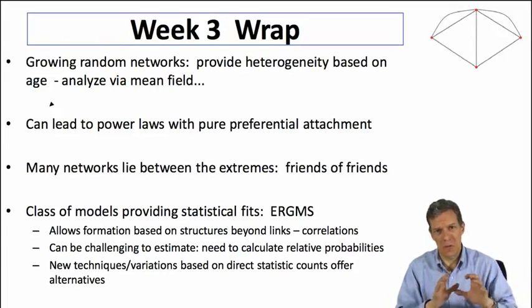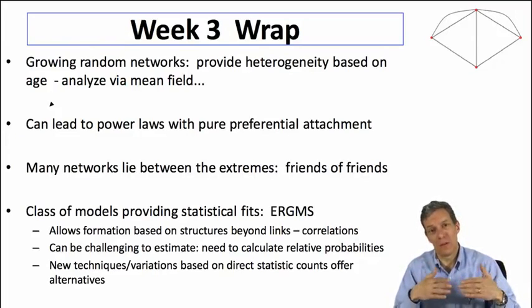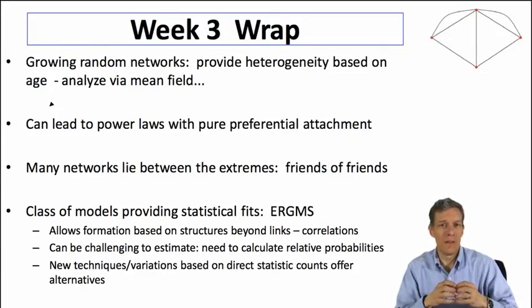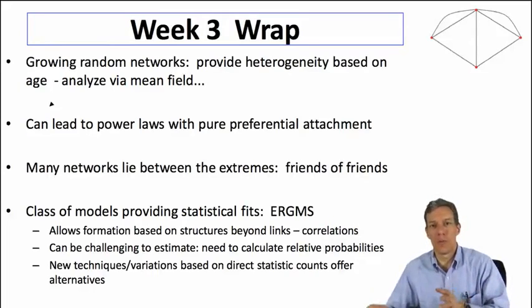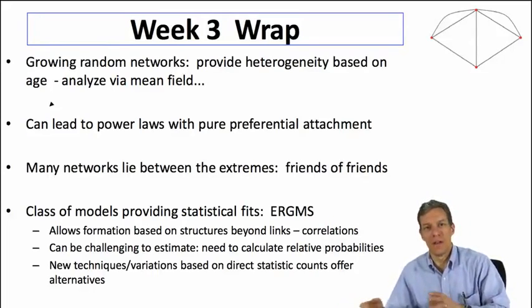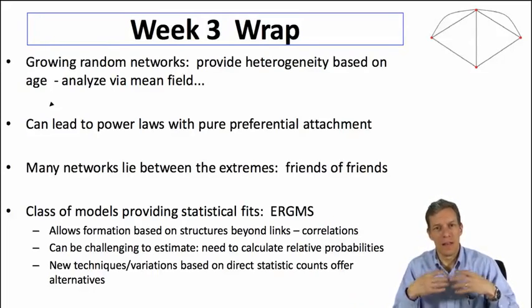we end up with a whole series of different degree distributions, which allow us to begin to fit different models. This hybrid aspect allows us to do some estimation and see what might be going on — some networks are formed more by searching and others not.